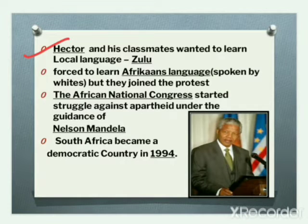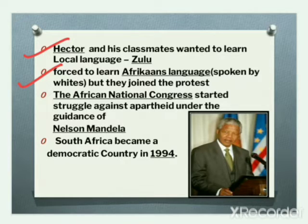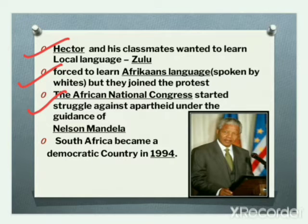Hector and his classmates wanted to learn their local language, Zulu, but they were forced to learn the Afrikaans language spoken by whites. So they joined a protest against learning that language in school, but the South African police beat up the protestors and killed Hector. He died on 16th June 1976. After this, the African National Congress started the struggle against the apartheid law under the guidance of Nelson Mandela.